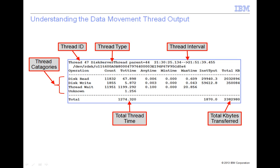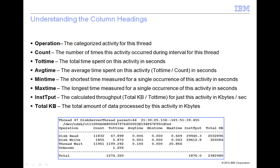For example, in a storage pool migration, there will be one thread reading the data from the source storage pool and one thread writing data to the target storage pool. They will both move approximately the same number of bytes. Use this chart to understand the meanings of the column values displayed in the thread output. These are the columns most often used for performance tuning.